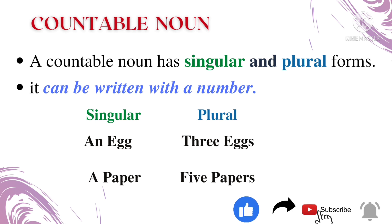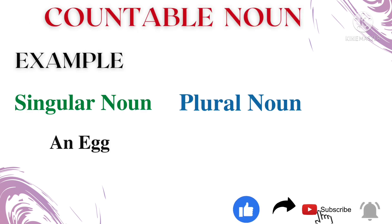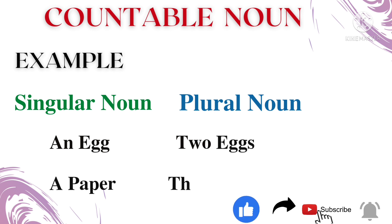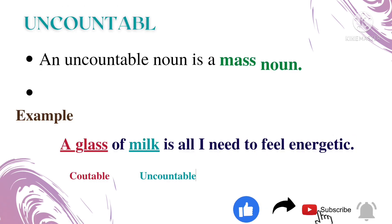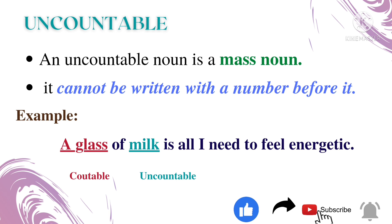What is a countable noun? A countable noun has singular and plural forms and can be written with a number. For example: 'an egg' is a singular noun, whereas 'two eggs' is the plural noun — here 'two' denotes the number of eggs. Another example: 'a paper' is singular, 'three papers' is plural — here 'three' denotes the number of papers.